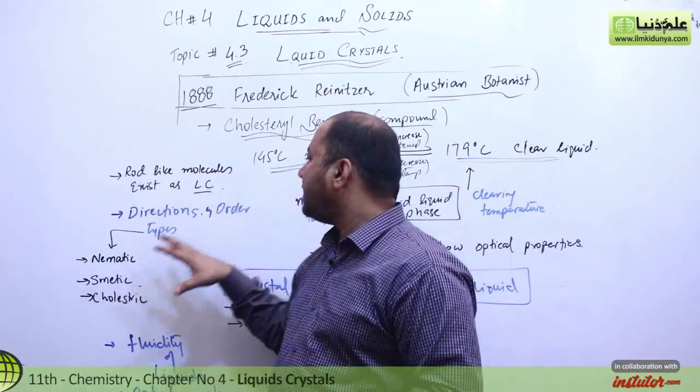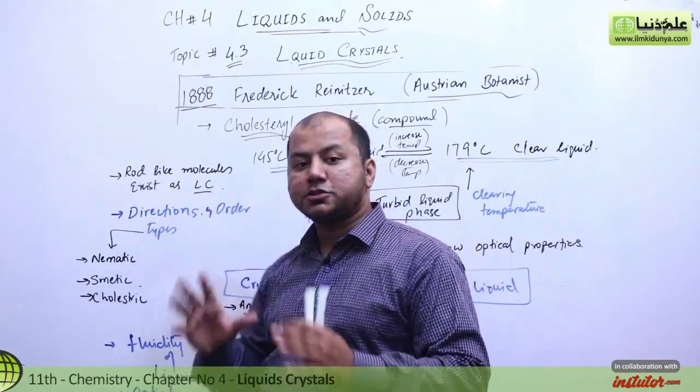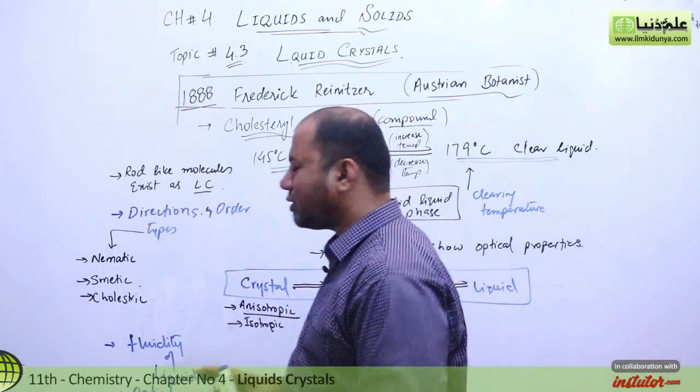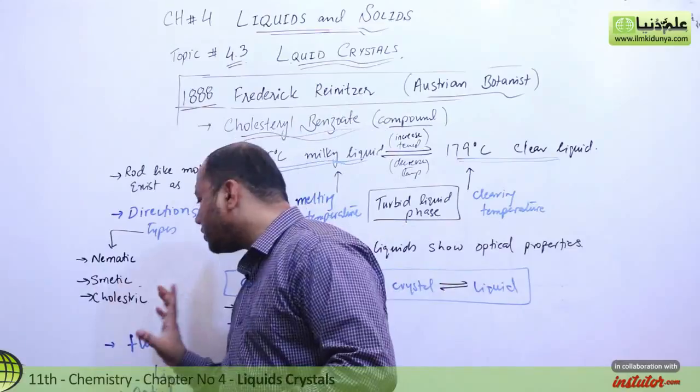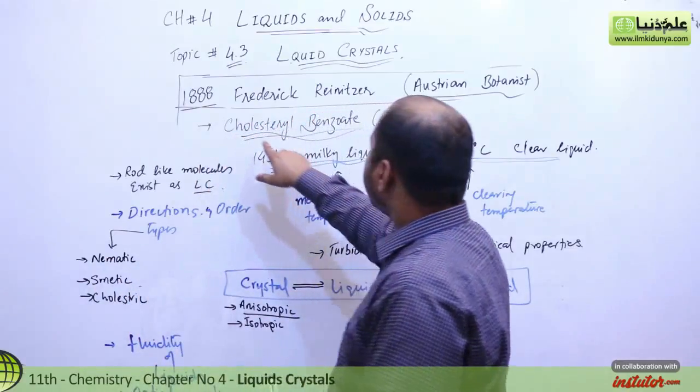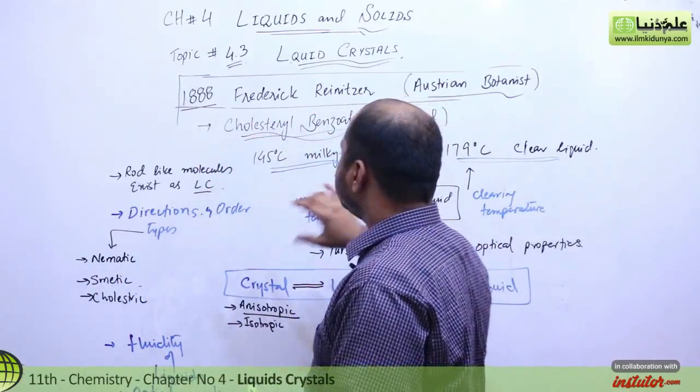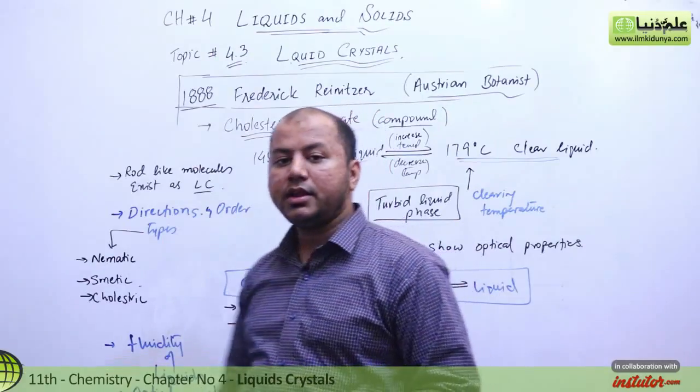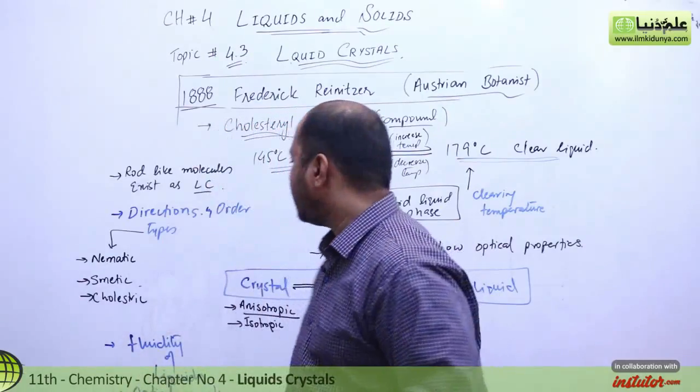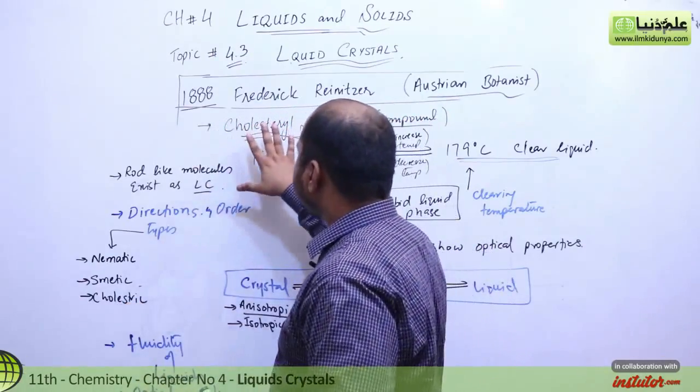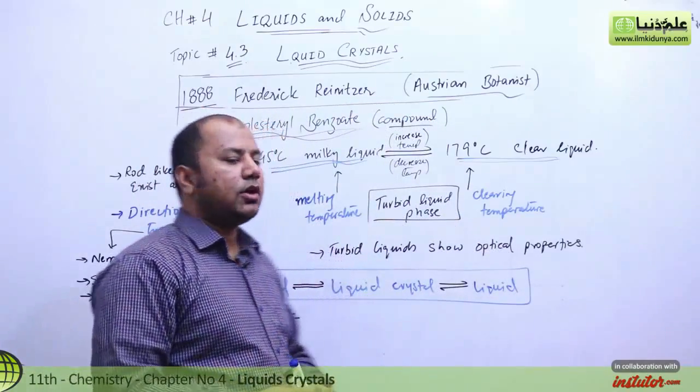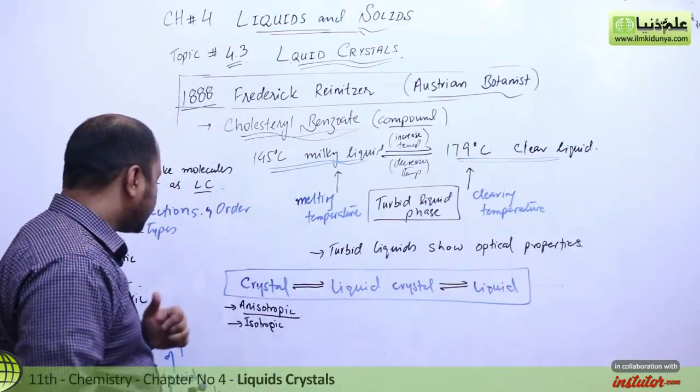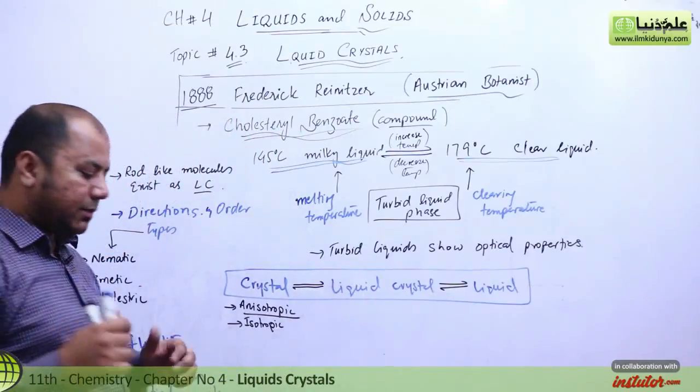Based on direction and order, there are three major types of crystals according to your syllabus: nematic, smectic, and cholesteric. And the compound I told you about, cholesteryl benzoate, which Frederick studied in 1888, is a cholesteric crystal. It belongs to the cholesterol type based on its order and direction.